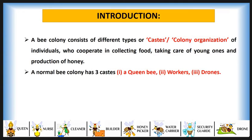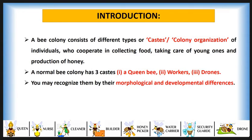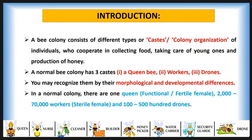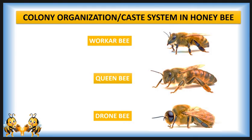A normal bee colony has three castes. First is queen bee, second is worker bee, and third is drone bees. You may recognize them by their morphological and developmental differences. In a normal colony there is one queen, which is a functional and fertile female. Then there are 2,000 to 70,000 workers called sterile females, and 100 to 500 drones called male bees. These are the three castes seen in a honey bee colony.